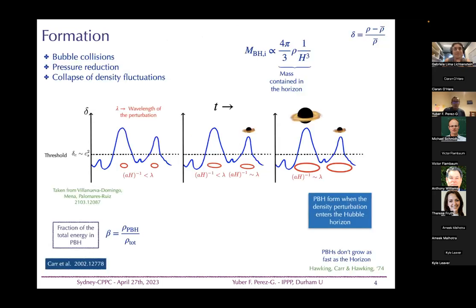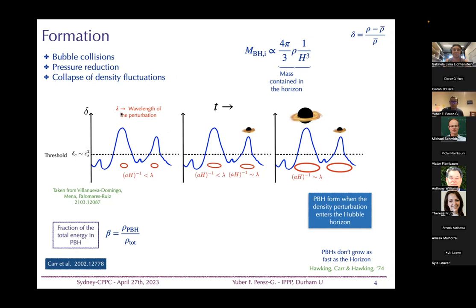In the early universe, many mechanisms have been proposed to form primordial black holes: bubble collisions during phase transitions, where particles get compressed and form a black hole; pressure reduction during the QCD transition allowing clumping; and the collapse of density fluctuations from inflation, where a density perturbation re-enters the horizon and must exceed a threshold to overcome radiation pressure.